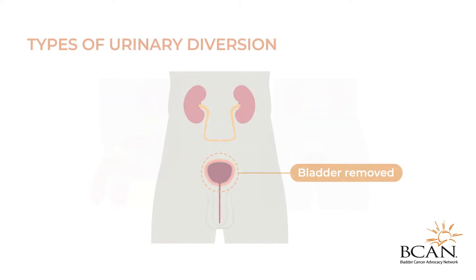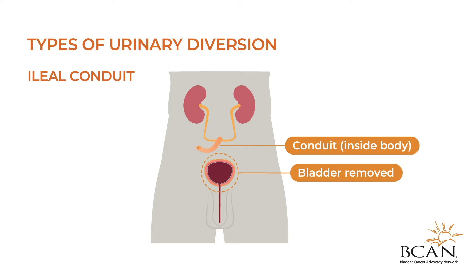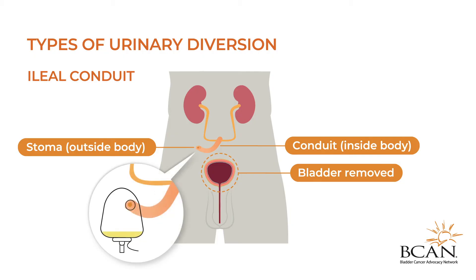A common type of urinary diversion is called an ileal conduit. This is when the surgeon creates a new tube from a piece of intestine that allows urine to pass through and out of the body via a small surgically created opening on the stomach known as a stoma. The urine then drains into a small pouch that fits over the stoma and attaches to the skin with an adhesive.